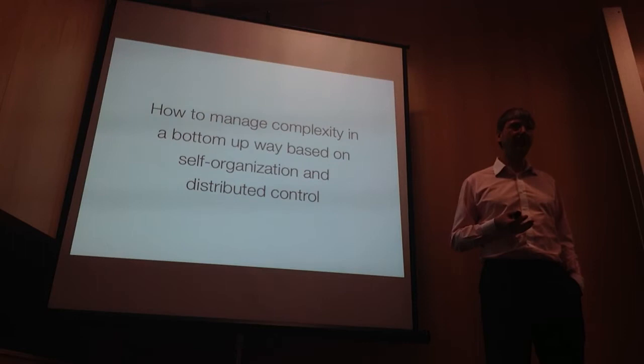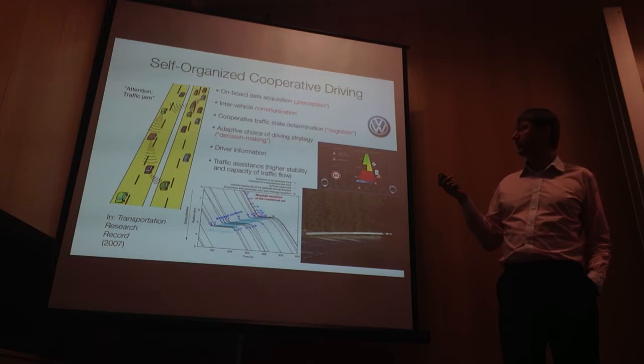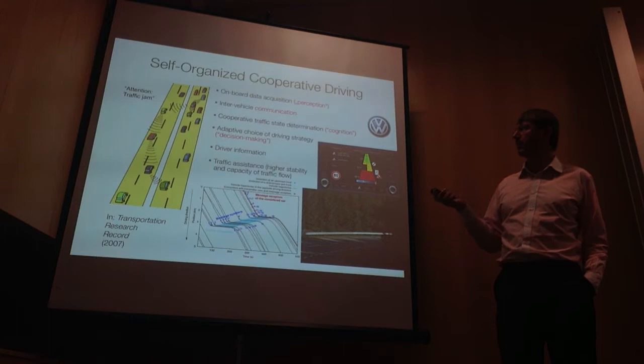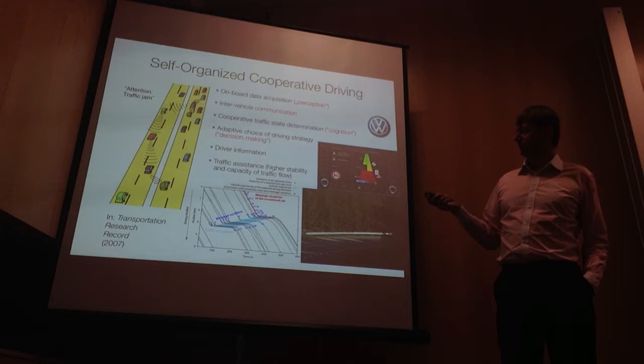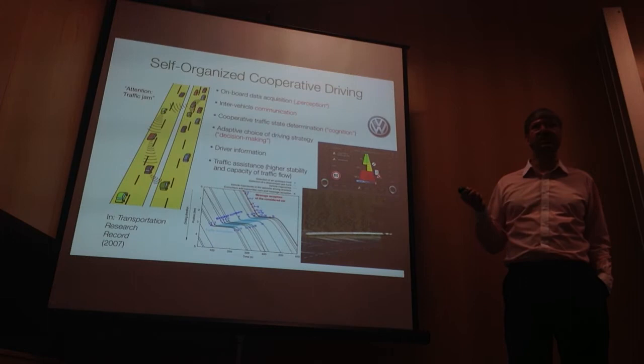How to manage complexity in a bottom-up way, based on self-organization and distributed control. Let's go back to vehicles. We've been collaborating with Volkswagen on how to improve traffic flow. The idea was that cars would become more and more intelligent — with perception via onboard data acquisition and inter-vehicle communication. Together, vehicles could figure out the traffic situation, and based on that information, cars would take decisions on how to change driving style to improve traffic flow.